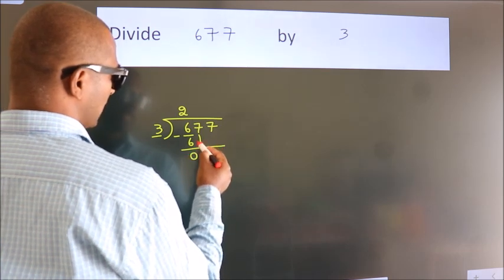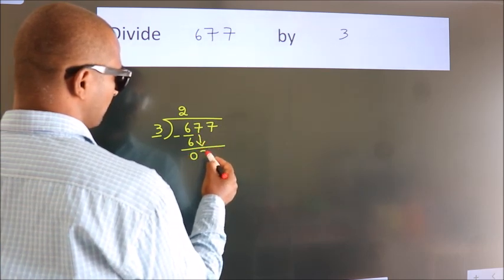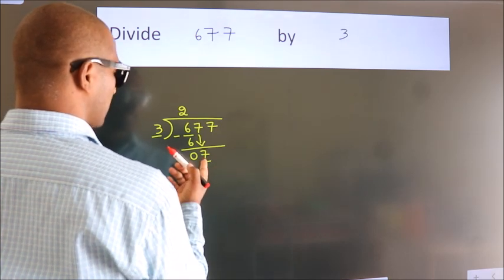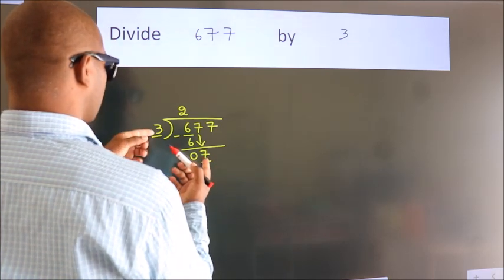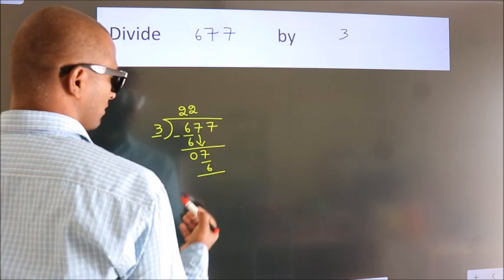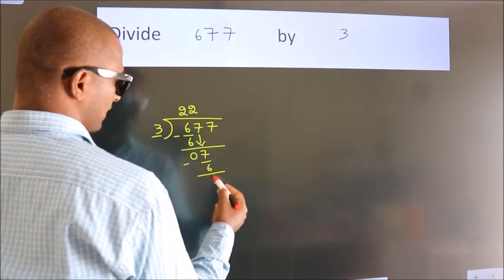After this, bring down the beside number. 7 down. So, 7. A number close to 7 in 3 table is 3 times 2, 6. Now, we subtract. We get 1.